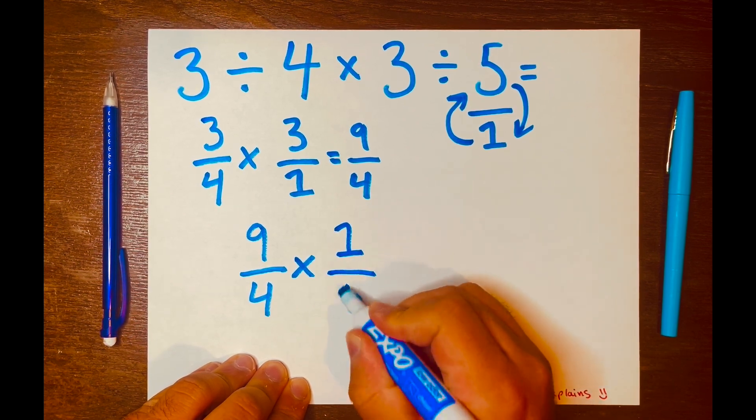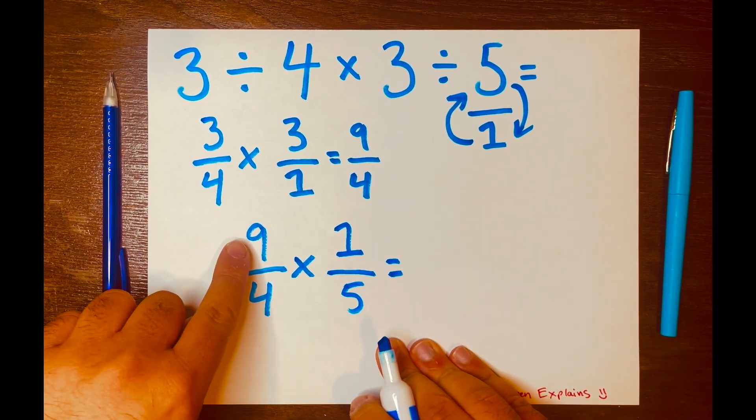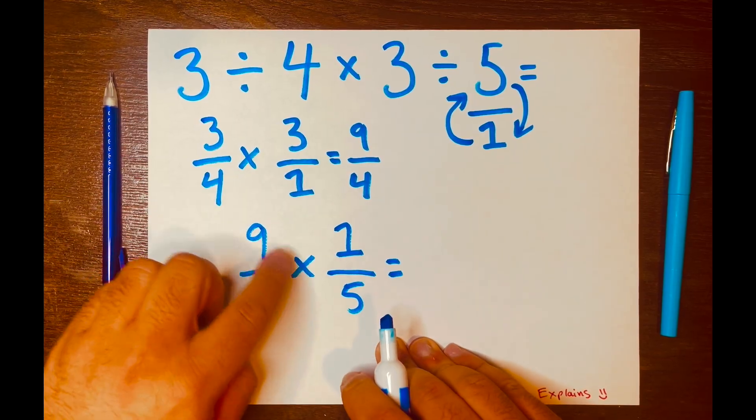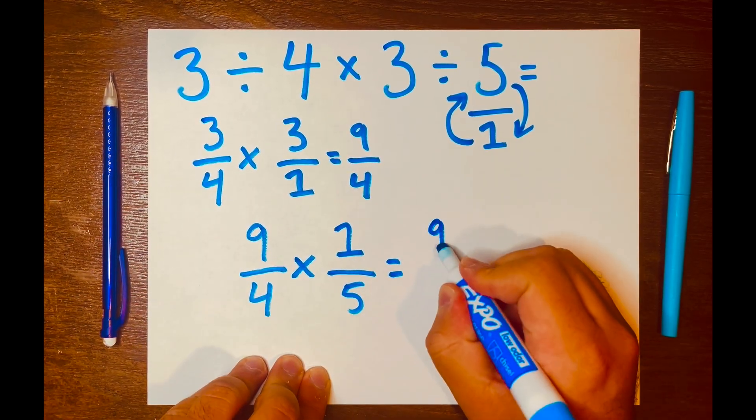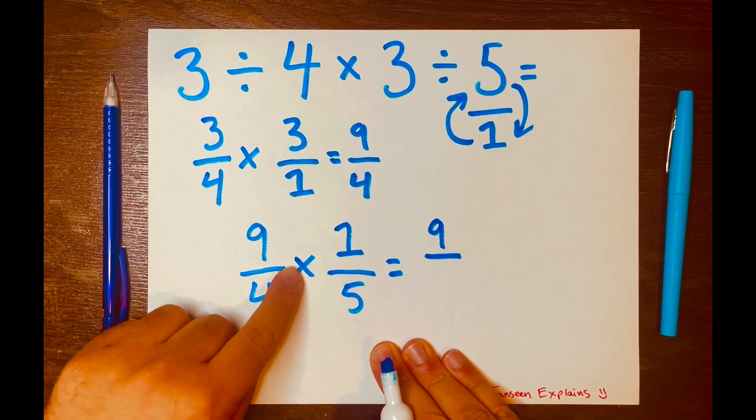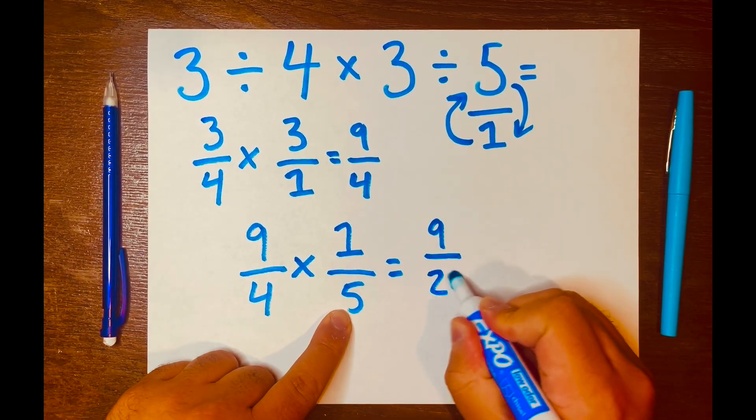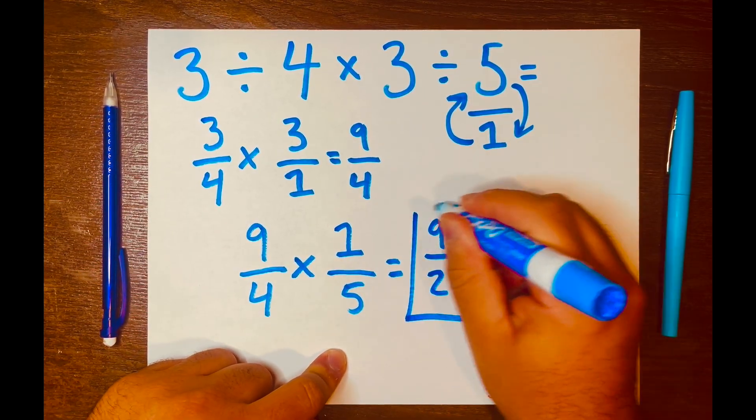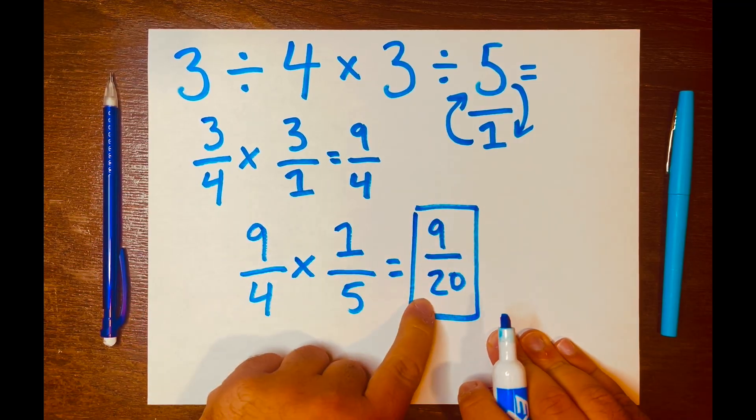It'll be written like this: one over five. And all you have to do now is multiply across. Nine times one is nine over four times five is 20. And you can't simplify this further. Nine over 20 is your answer.